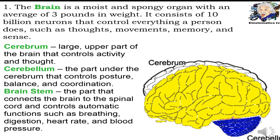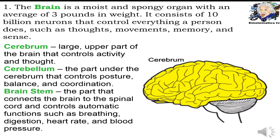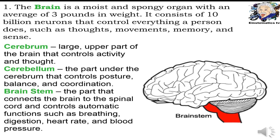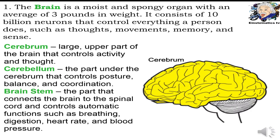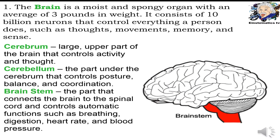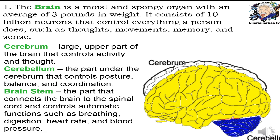The last major division of the brain is known as the brain stem. It controls automatic functions such as breathing, digestion, heart rate, and blood pressure. It is the part that connects the brain to the spinal cord and controls automatic functions.